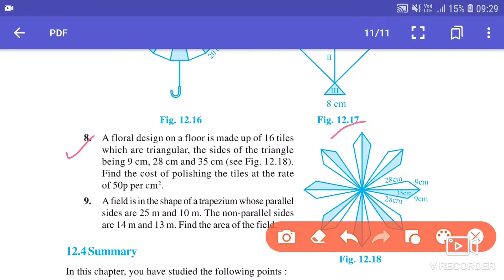So here we have a floral design which is made up of 16 triangles, with each triangle having sides of 9 cm, 28 cm, and 35 cm. Now we have to polish this floral design and the rate of this polishing is 50 paisa per centimeter square. So we have to find the cost if we have to polish this whole floral design.